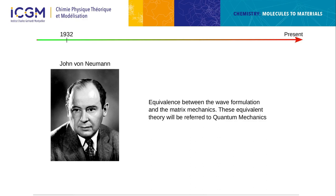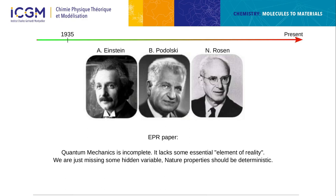Von Neumann unified the wave and matrix mechanics formulations under 'quantum mechanics.' But not everyone agreed. The famous Einstein, Podolsky, and Rosen paper in 1935 noticed particular effects of entangled states, but disagreed about the consequences. They said quantum mechanics is incomplete and lacks elements of reality — that we were just missing, due to ignorance, some hidden variables that could explain all quantum properties. For them, nature should be deterministic.